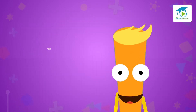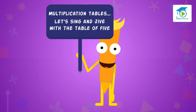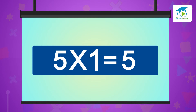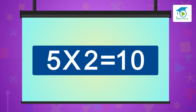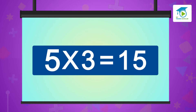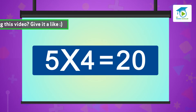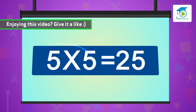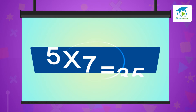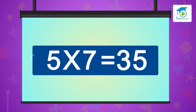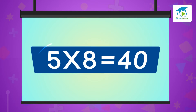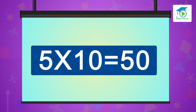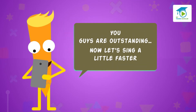My friends, here is a fun way to learn multiplication tables. Let's sing and jive with the Table of Five. Five ones are five, five twos are ten, five threes are fifteen, five fours are twenty, five fives are twenty-five, five sixes are thirty, five sevens are thirty-five, five eights are forty, five nines are forty-five, five tens are fifty. You guys are outstanding!